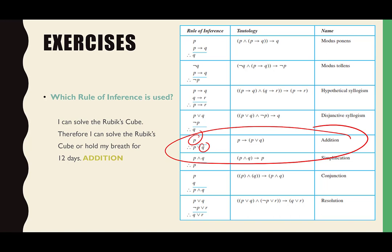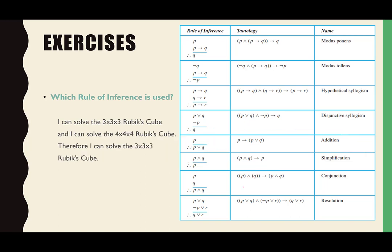'I can solve the 3 by 3 Rubik's Cube and I can solve the 4 by 4 Rubik's Cube, therefore I can solve the 3 by 3 Rubik's Cube.' Which rule of inference is that? Simplification. P is the 3 by 3, Q is the 4 by 4, and therefore P is true. Either P or Q would have worked. That's simplification.